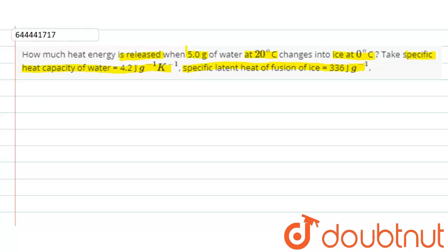So friends, we are given initially water at 20 degree Celsius. This water is then converted into water at 0 degree Celsius. And finally, it gets converted into ice at 0 degree Celsius.